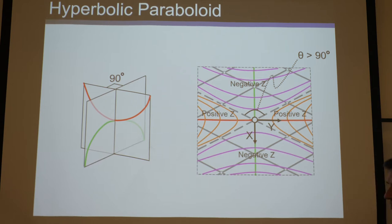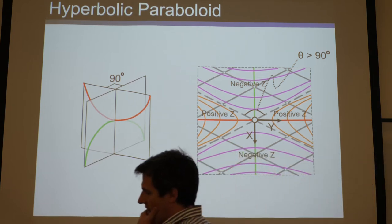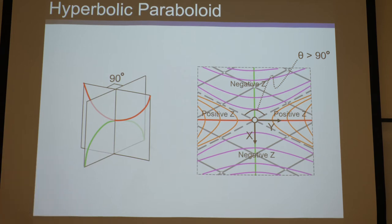Okay, and so that's what happens when you have a non-orthogonal hyperbolic paraboloid. So those are the two kinds.